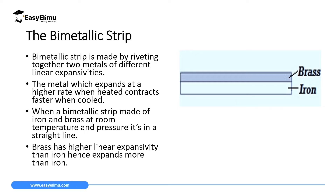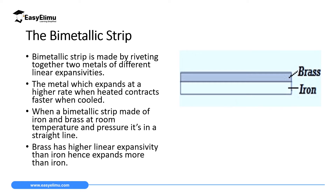A bimetallic strip is made by riveting together two metals of different linear expansivity. Riveting means joining them so they cannot detach from each other. The bimetallic strip uses the idea that a metal which expands more when heated also contracts more when cooled. At room temperature, the two metals lie in a straight line.